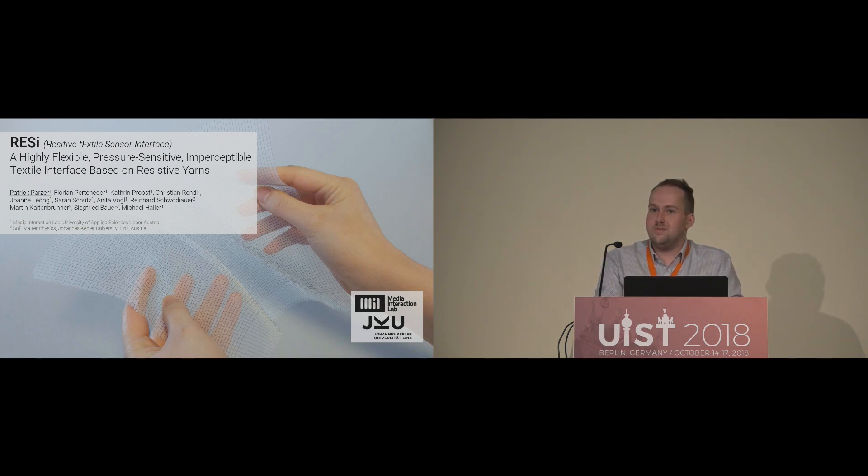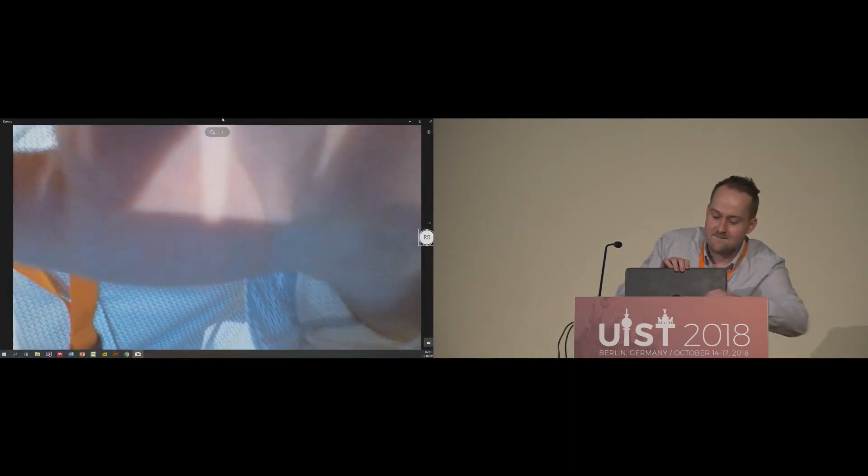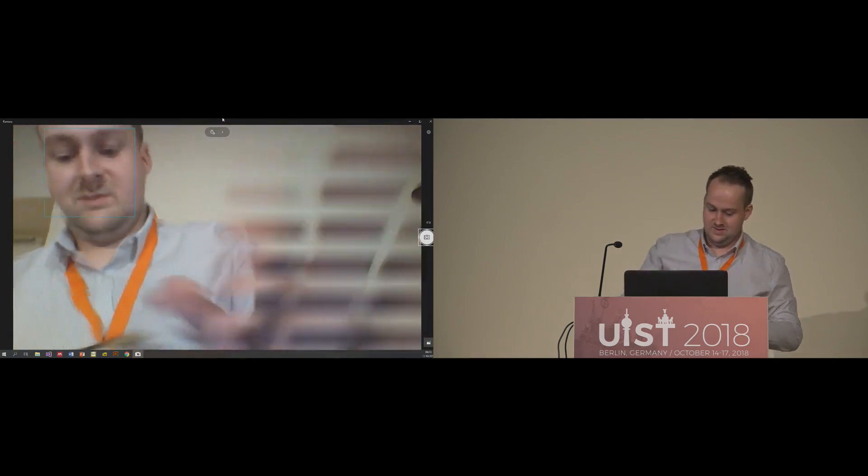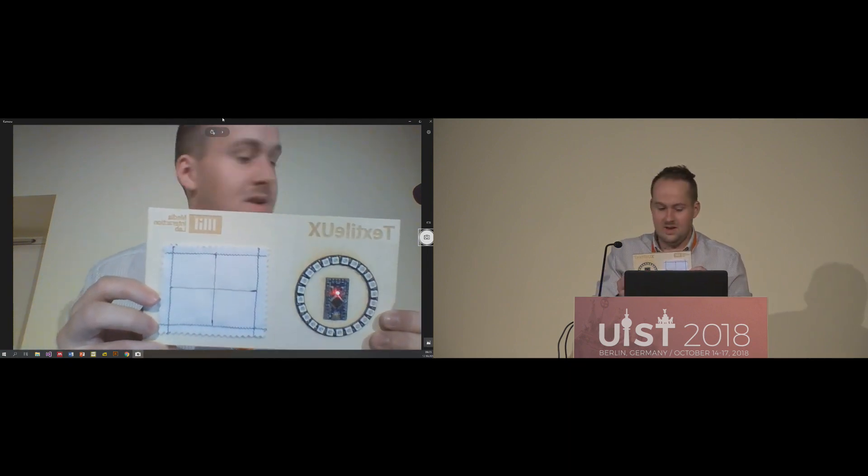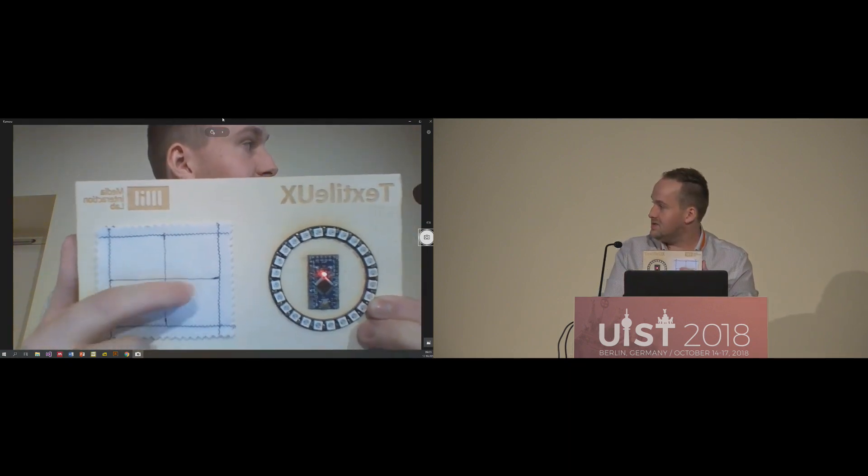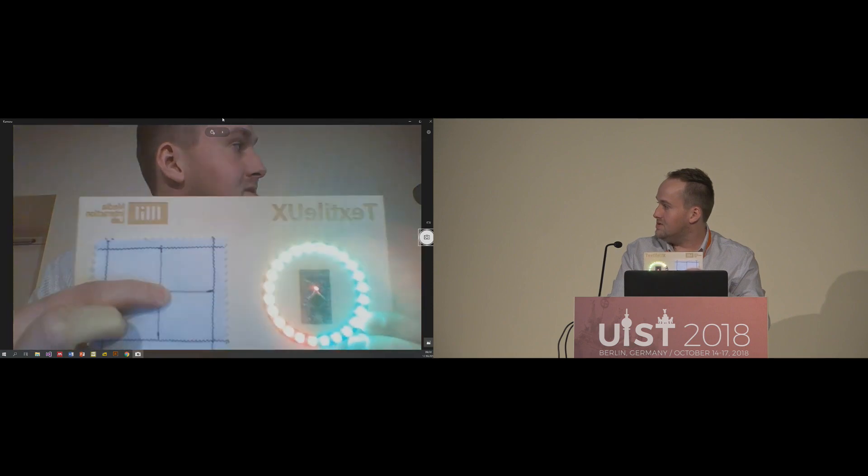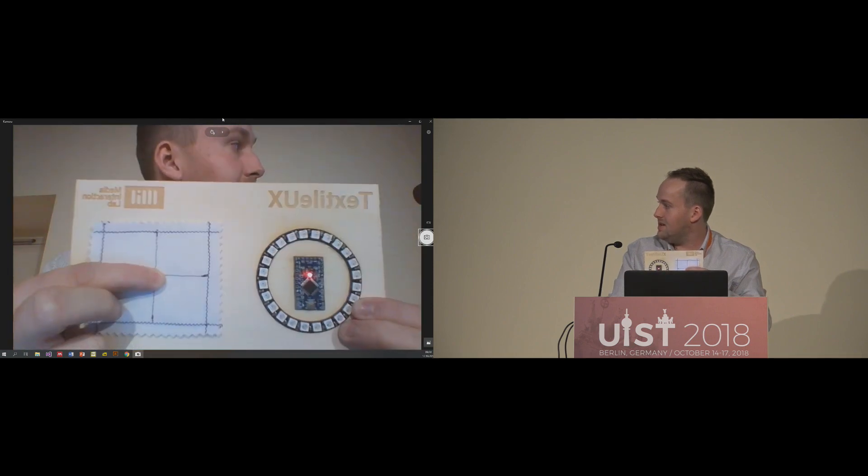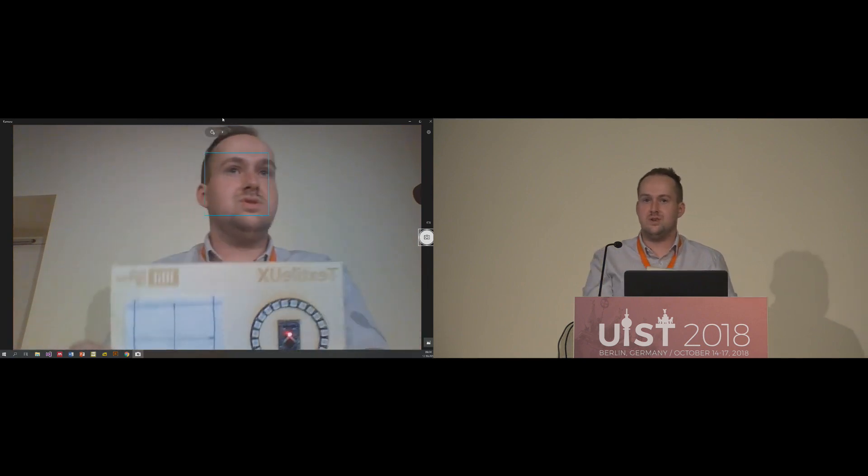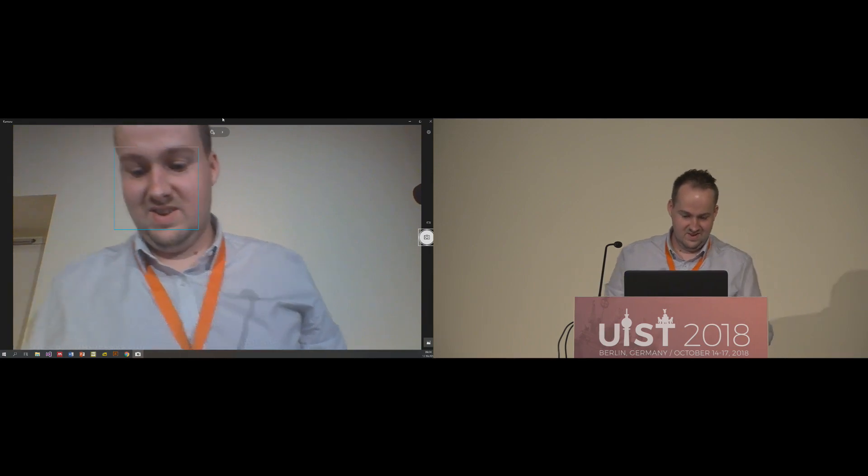This is a joint work between the Media Interaction Lab and the Soft Metaphysics Department of the Johannes Kepler University. Before I dive deeper, let's start with a live demo. So this is our prototype and you can see here two resistive yarns sewn into a standard textile. By applying pressure onto this intersection we can already detect pressure. It's just two single yarns.